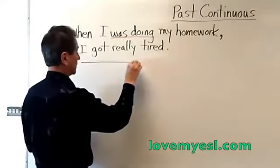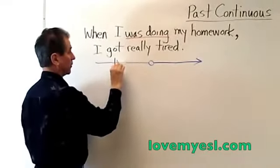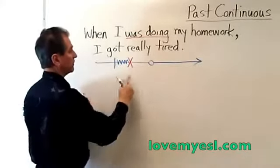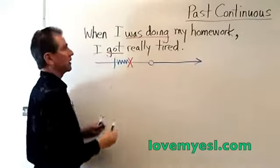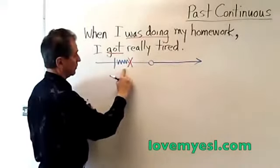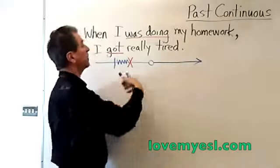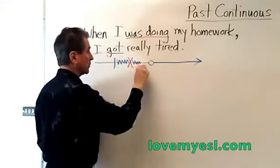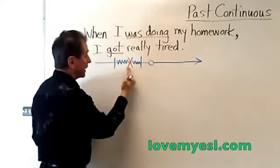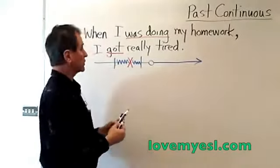I'll use blue on the timeline. Here's the past, the present, and the future. So this sentence would be represented like this: I was doing my homework — there's the start of doing my homework, and I'm continuing. Then all of a sudden I got really tired. That's a very fast action, and that's why I use the simple past: 'I got really tired.' The long action — the one that starts first — is the past continuous. I was doing my homework, and then I got really tired, so I probably took a break or watched TV. The simple past happens in the middle or at the end of the action, and sometimes it can finish that action.